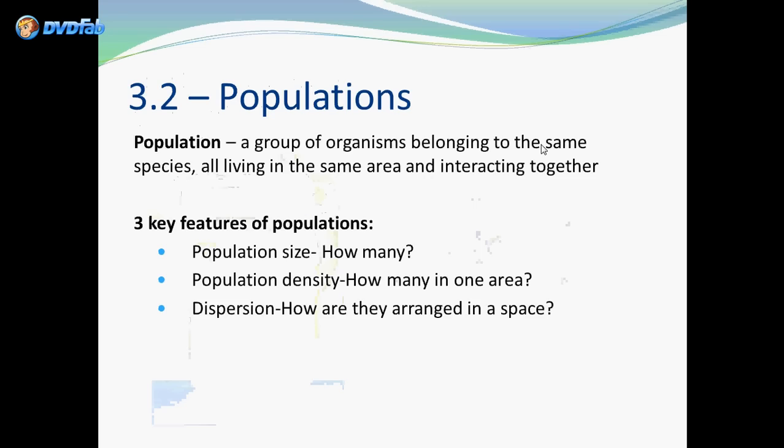Section 2: Populations. We'll go a little more into depth about populations. Again, a population is a group of organisms belonging to the same species, all living in the same area and interacting together. There are three key features: population size — how many are there; population density — how many are in one area; and dispersion — how are they arranged in a space.